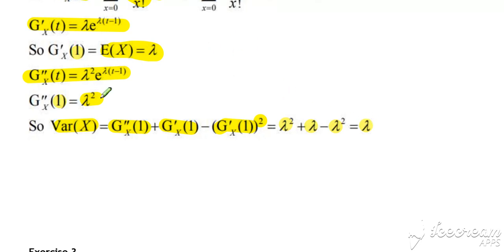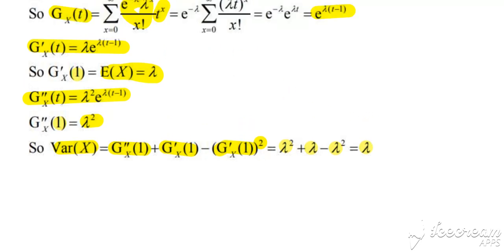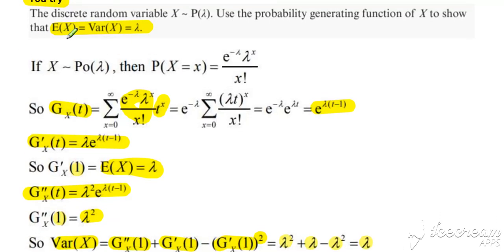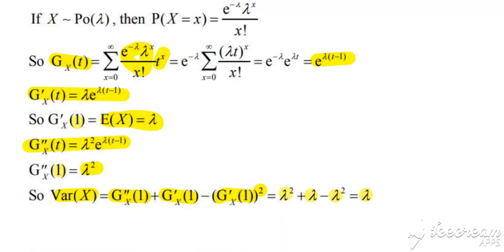So, quite a neat little proof of the mean and the variance for lambda. So, when we first met the Poisson, I just gave you those results. This is the derivation of why the expected value and the variance for the Poisson distribution are both the same and both equal to lambda.